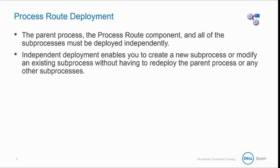Independent deployment enables you to create a new subprocess or modify an existing subprocess without having to redeploy the parent process or any other subprocesses. Narrowing the deployment process to just the process route component and the affected subprocesses can have a positive impact on time to production. Change management procedures typically require testing anything that's modified, but limiting the modifications to a subprocess or the process route component and a new subprocess can significantly reduce the amount of testing required.